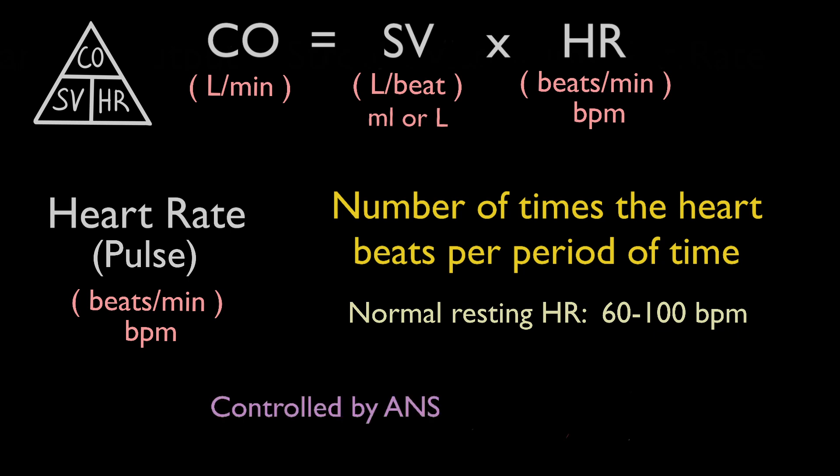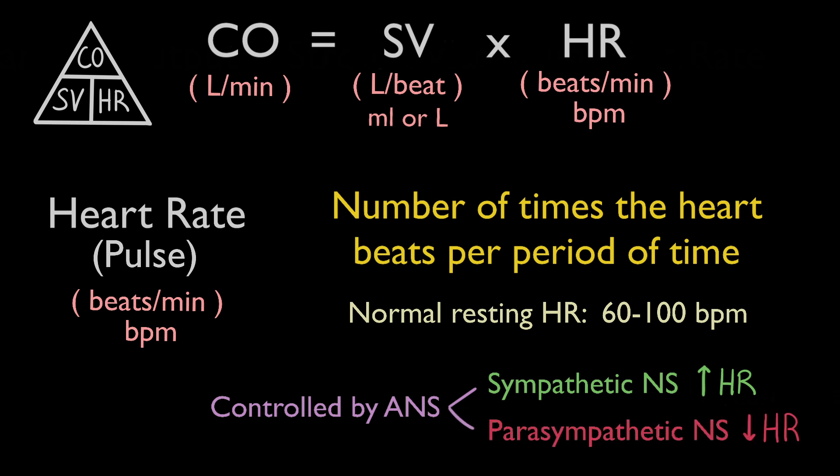The heart rate is controlled by the autonomic nervous system, which automatically responds to changes in the body's oxygen and carbon dioxide levels, blood pressure, and other factors. During exercise or in response to stress, the sympathetic nervous system can increase the heart rate to supply the body with more oxygen. During resting periods when the body doesn't need as much oxygen, the parasympathetic nervous system will lower the heart rate.